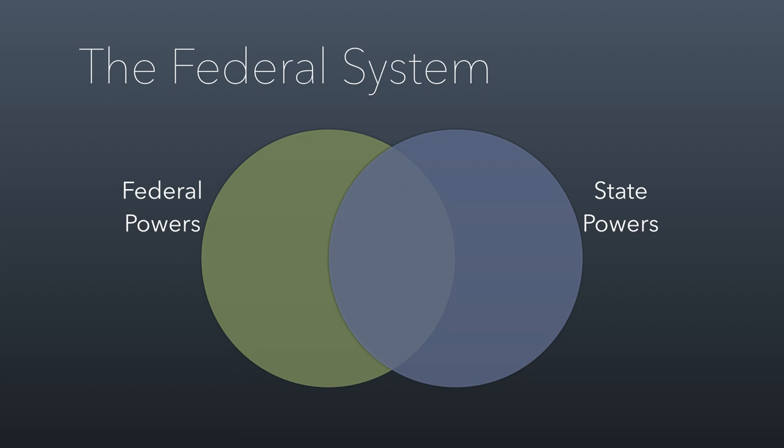These powers come from constitutional rights provided to the federal and state powers. So really all this comes from the U.S. Constitution. For example, the Constitution allows that both the federal and state governments can levy taxes and establish courts to enforce their own laws. State courts enforce state laws; federal courts enforce federal laws. There are times where a federal court can enforce state law or vice versa, but those are pretty limited in circumstance.